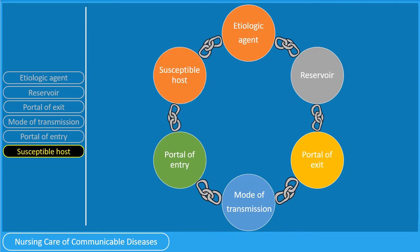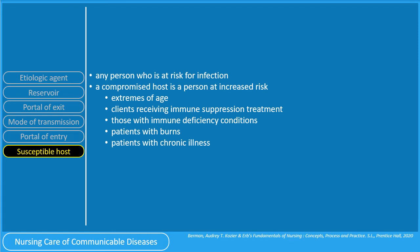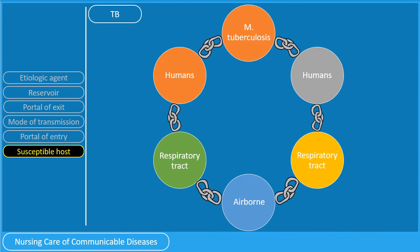For the last link to complete the chain of infection: the susceptible host. A susceptible host is any person who is at risk for infection. A compromised host is a person at an increased risk for infection. Examples of compromised hosts include the elderly and the newborn, clients receiving immune suppression treatment, those with immune deficiency conditions, patients with burns, and patients with chronic illness. To complete the chain of infection of tuberculosis, any person could actually be a susceptible host.